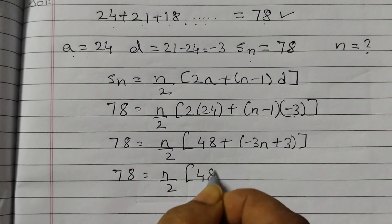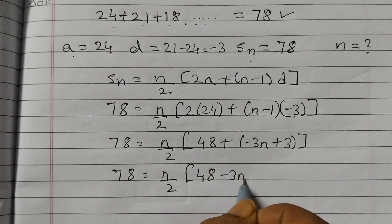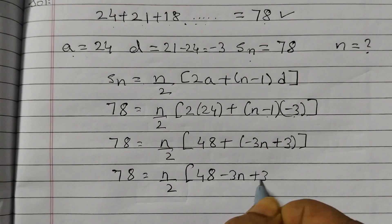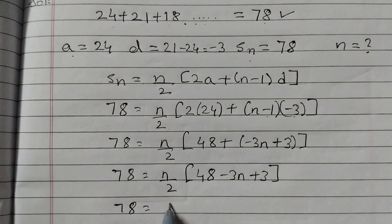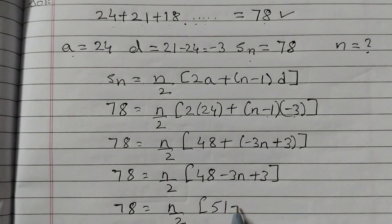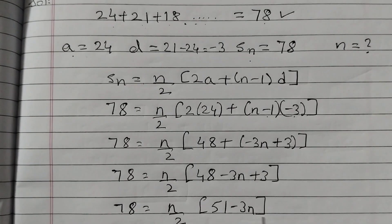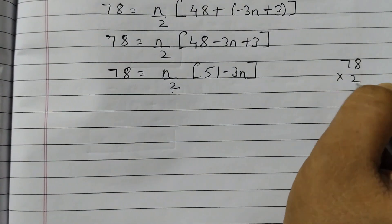78 equals to n by 2, 48 take these out of the bracket so that will be minus 3n plus 3. 78 is equal to n by 2, 48 plus 3 is 51. So 51 minus 3n, take 2 to the other side, 78 into 2.